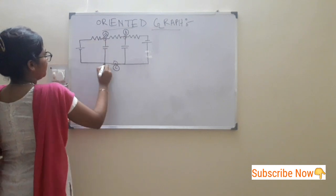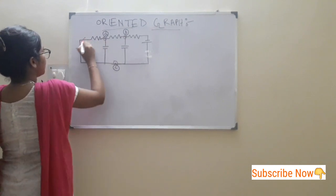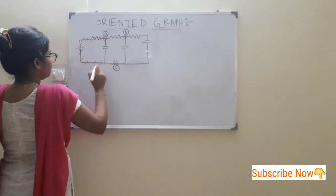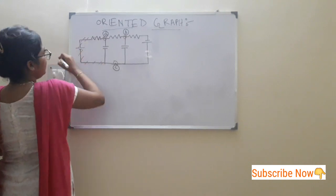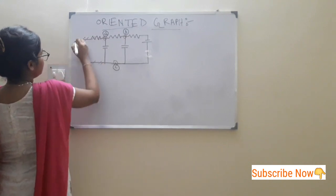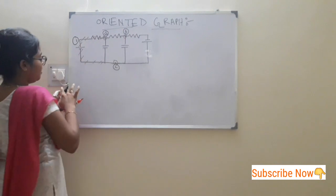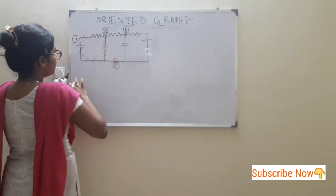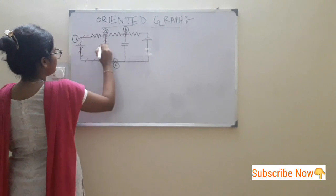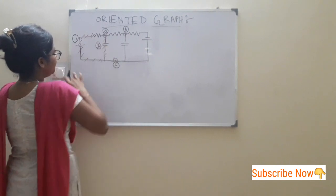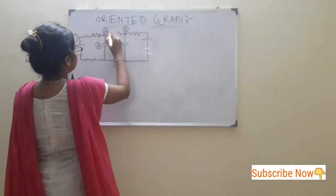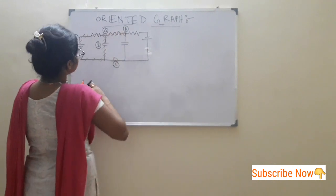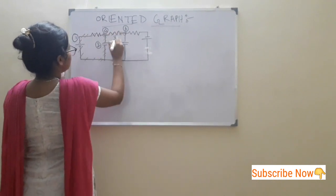This is a branch. This branch is numbered by number 1. This is another branch, numbered by 2. This is another branch, numbered by 3.